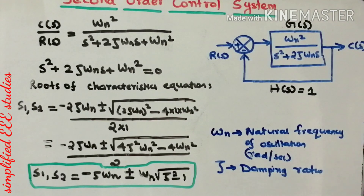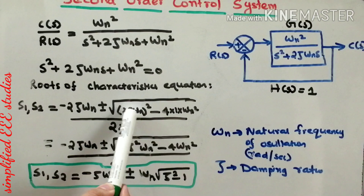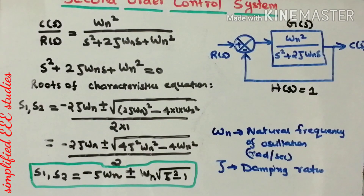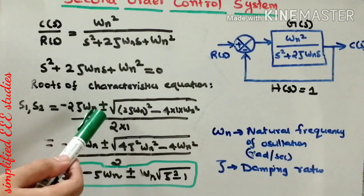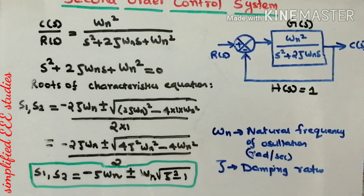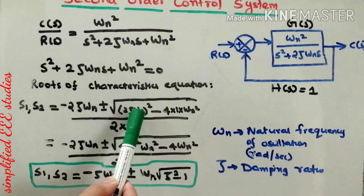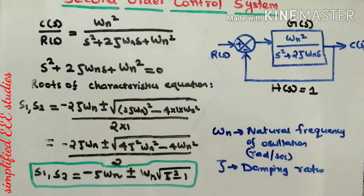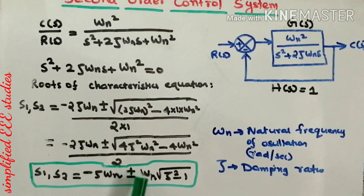Applying the quadratic formula with a=1, b=2ζωn, and c=ωn², the two roots S1 and S2 are: minus 2ζωn plus or minus square root of (2ζωn)² minus 4ωn², all divided by 2. Simplifying, this gives S1, S2 equal to minus ζωn plus or minus ωn times the square root of ζ² minus 1.